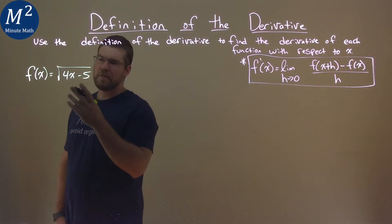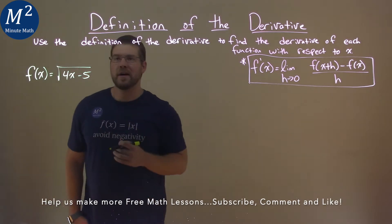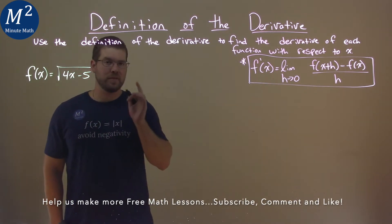We're given this problem right here. f(x) is equal to the square root of 4x minus 5, and we have to find the derivative using the definition of the derivative.